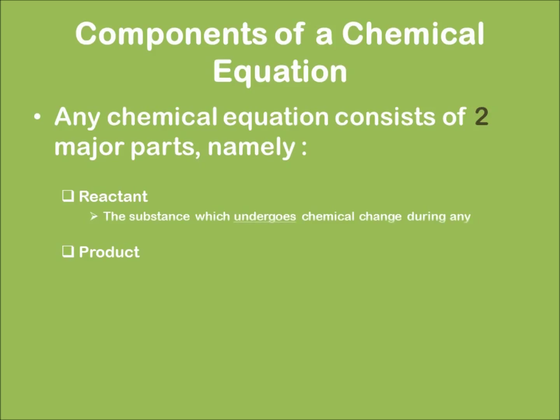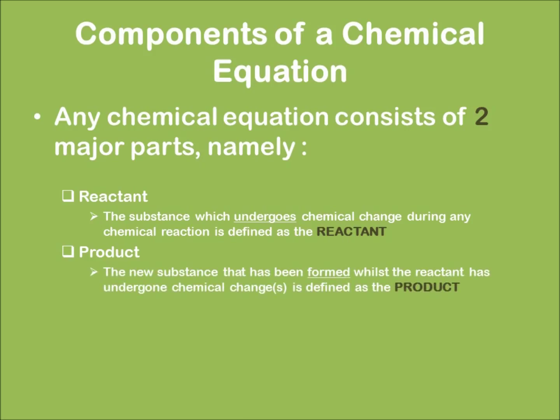And that substance which has been formed when the reactant has undergone a chemical change is known as a product. So basically, a reactant will undergo chemical change to form a product. This is the basic sketch of what actually happens in a chemical equation.